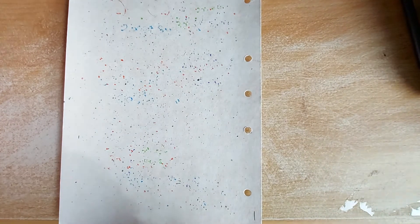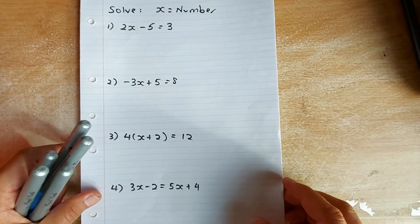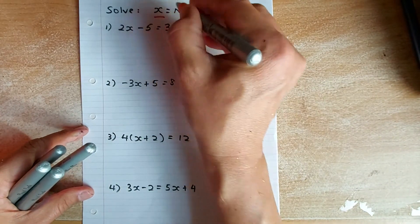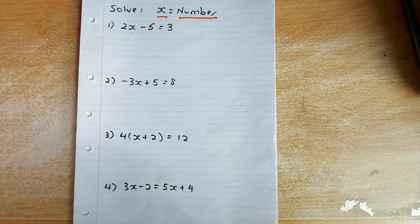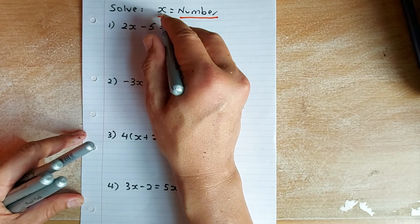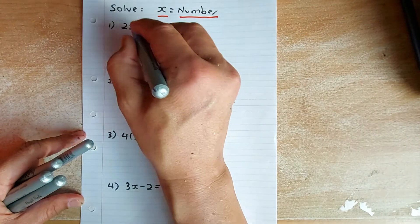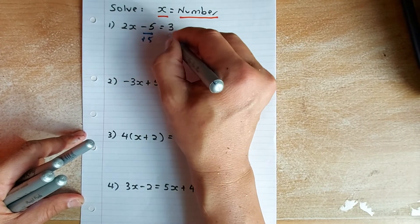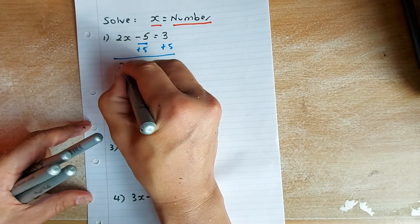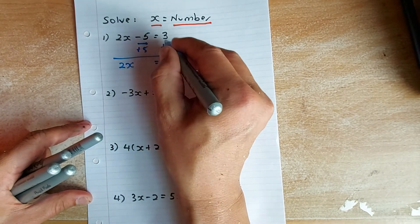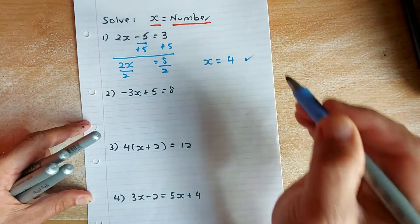Now we're going to do 6 questions on solving, from easy to difficult. Solving means putting x on the left and the number on the right. Example: 2x minus 5 equals 3. The minus 5 is an intruder, so we do the opposite and add 5 on both sides. 5 minus 5 cancels, leaving 2x equals 8. Divide by 2 and the answer is x equals 4. That's a simple take.